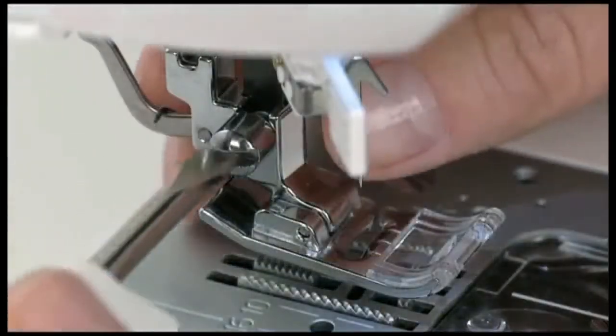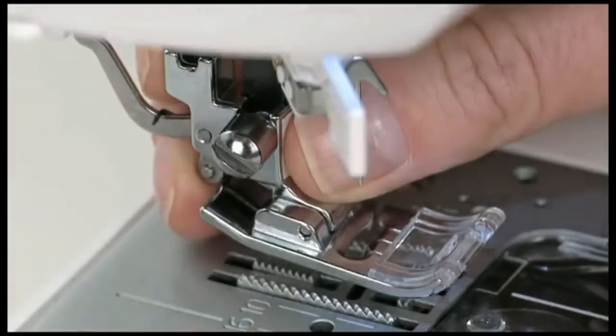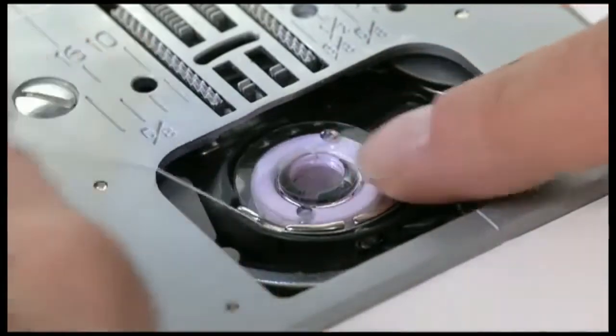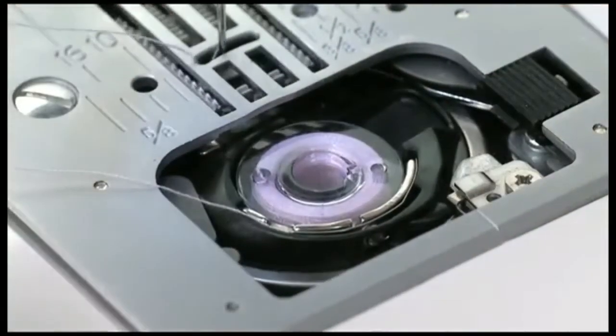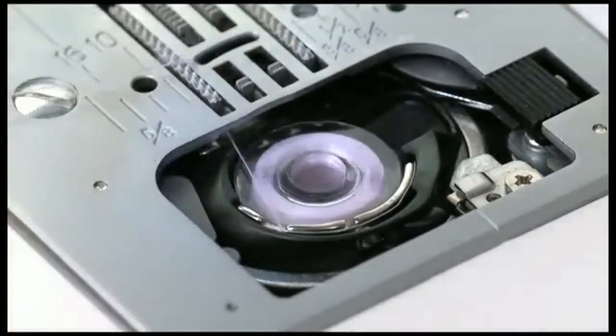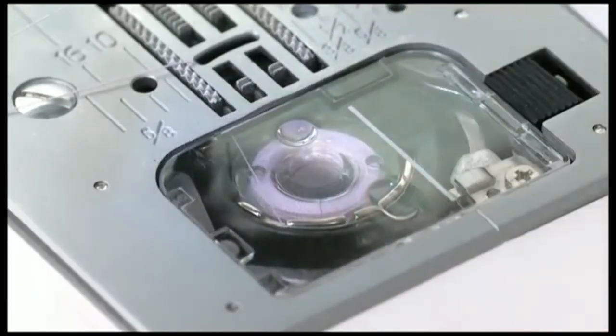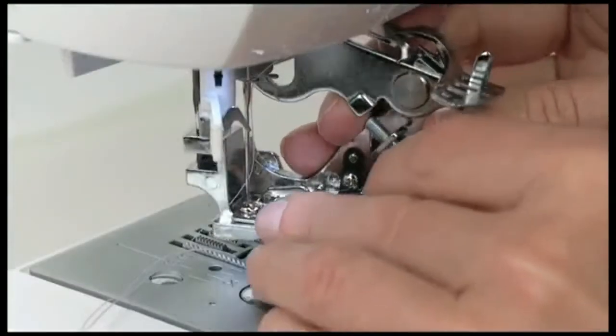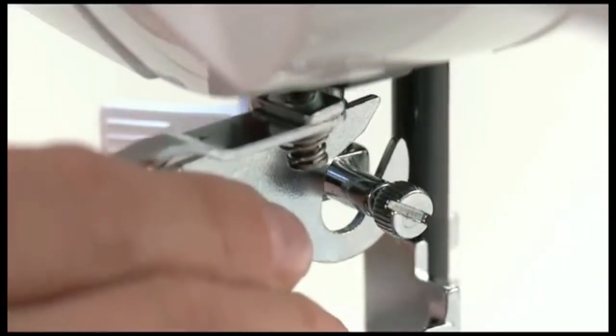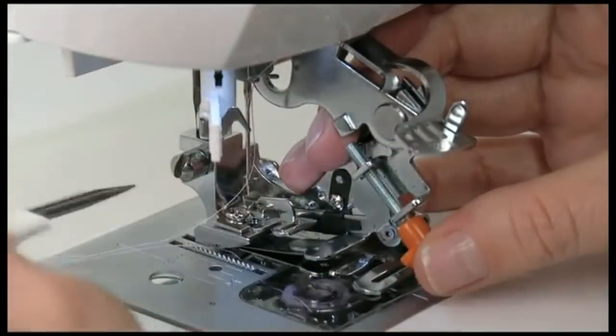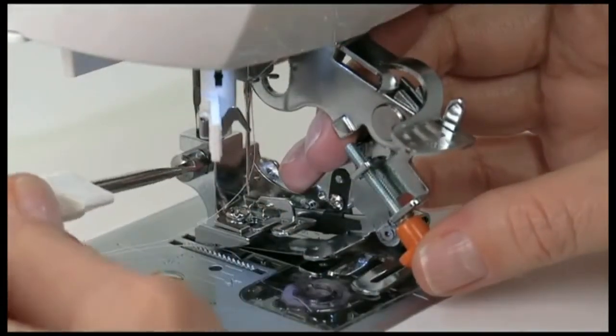Remove the presser foot and presser foot holder by loosening the screw at the side of the presser bar. Thread the top of the machine and bobbin before attaching the ruffler to the machine. Set the ruffler in place on the presser bar, making sure that the fork of the arm is correctly positioned around the needle clamp. Tighten the screw securely.